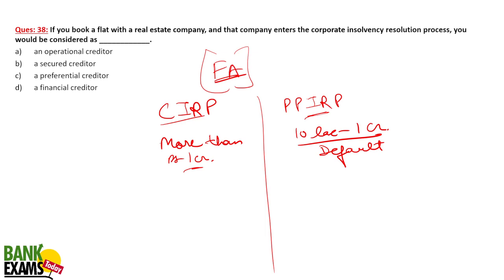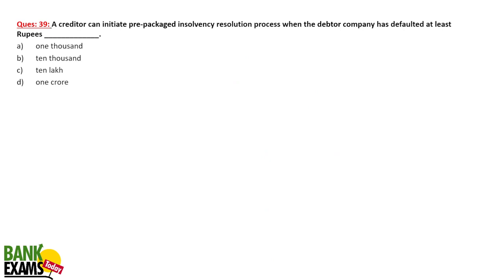The person who books a flat is considered an operational creditor. You should know the limits: for PPIRP (Pre-Packaged Insolvency Resolution Process), the debtor company must have defaulted at least 10 lakh rupees minimum, with a maximum of one crore rupees. After one crore, Corporate Insolvency Resolution Process (CIRP) applies. So C is the answer.